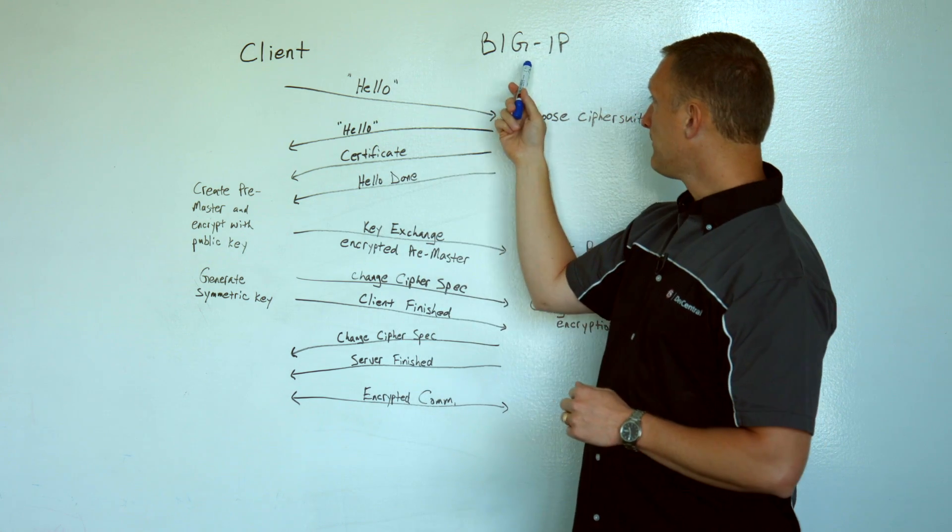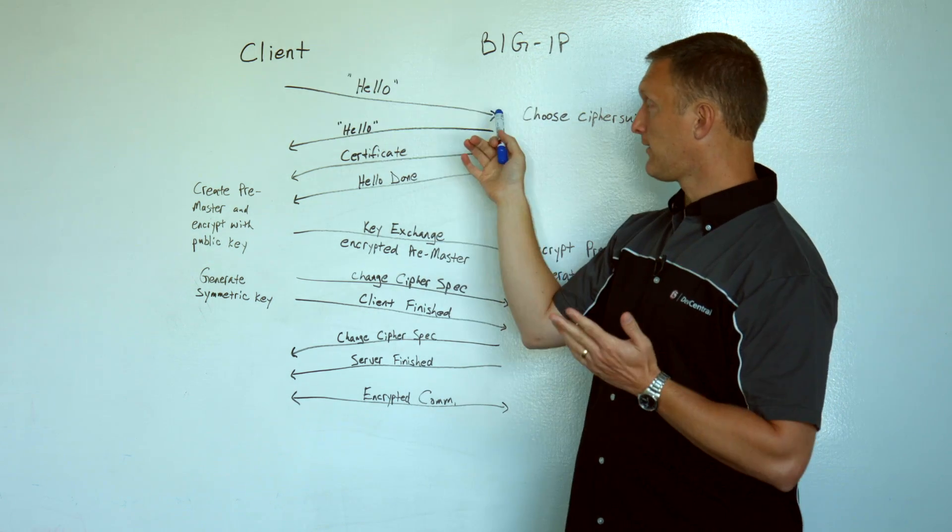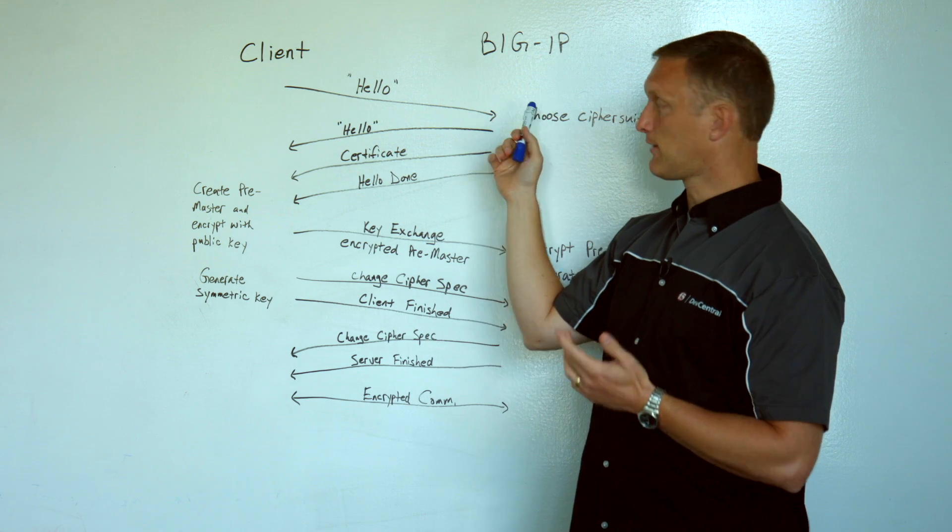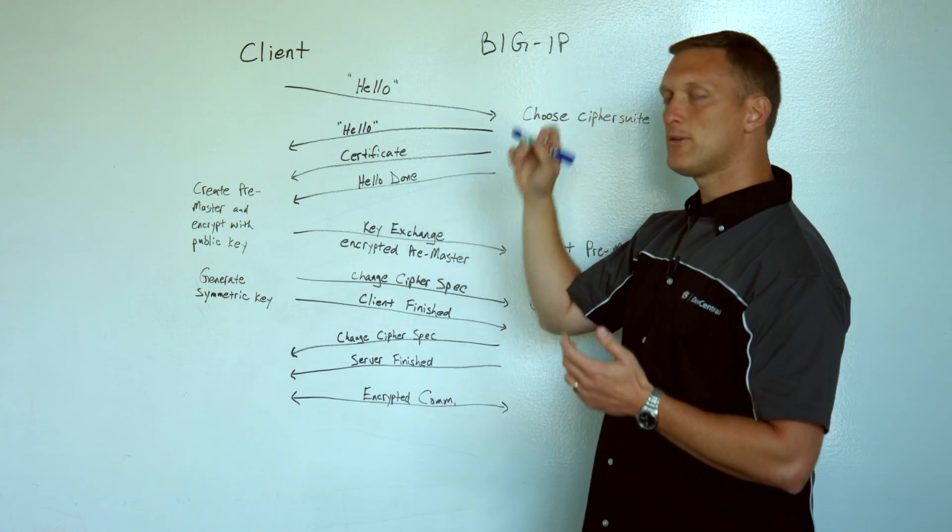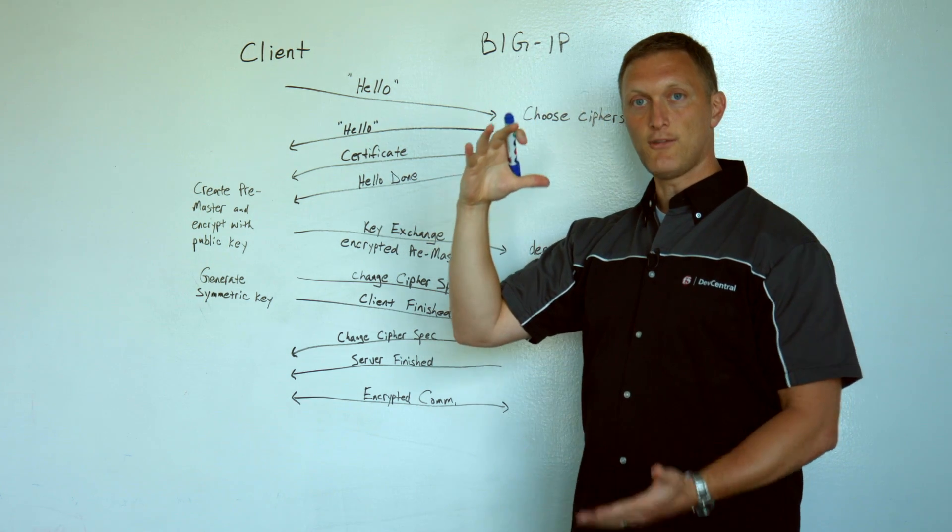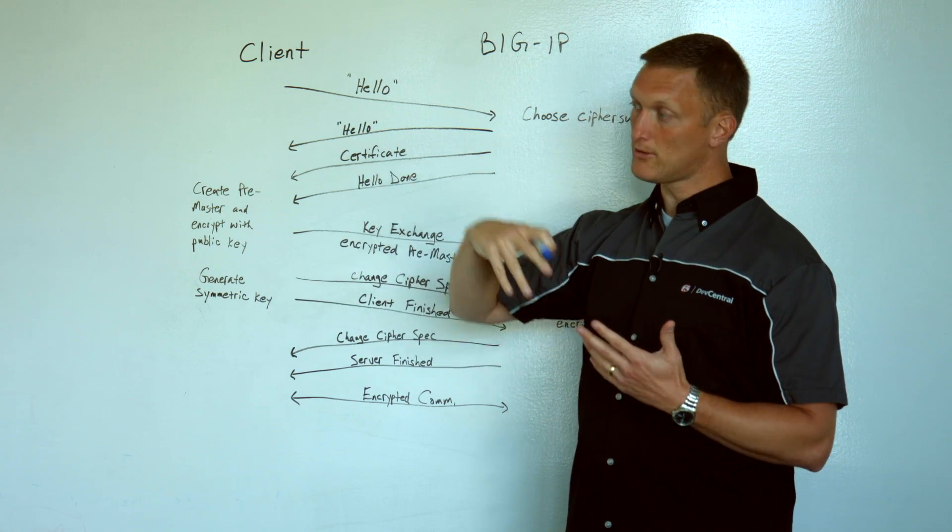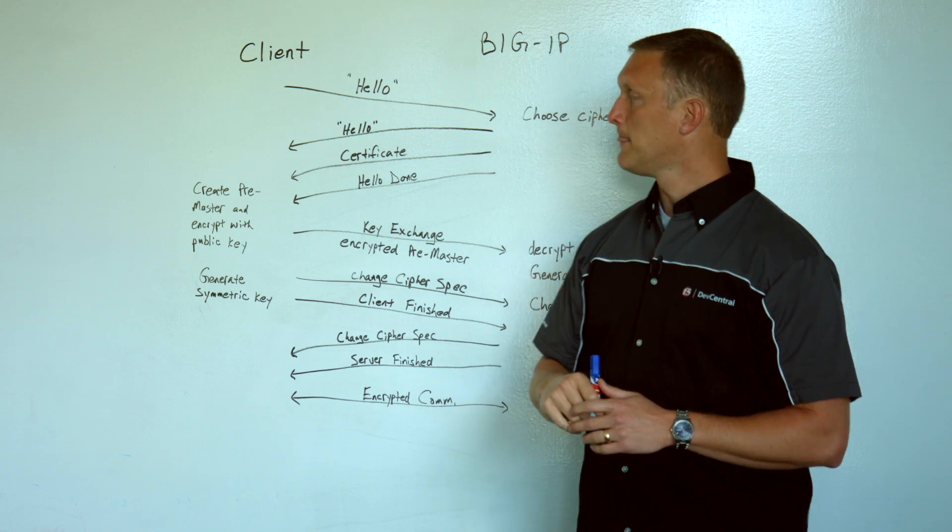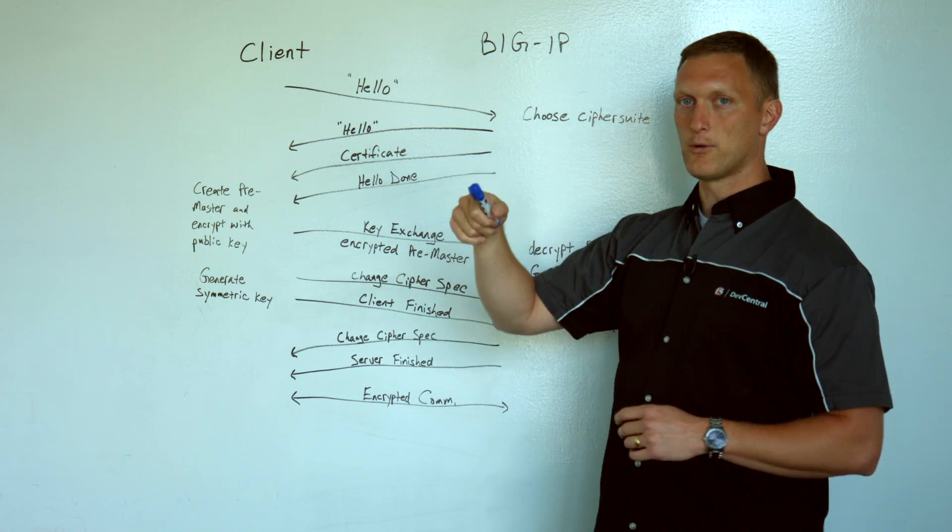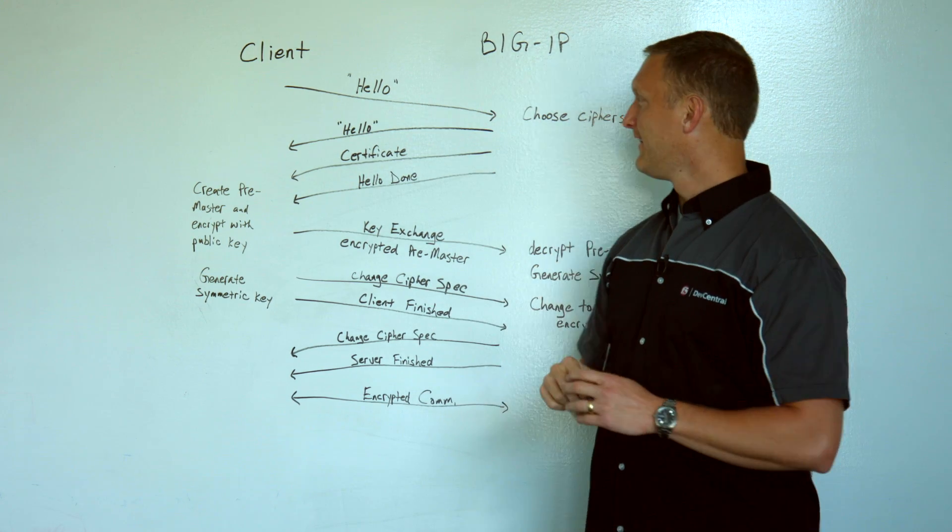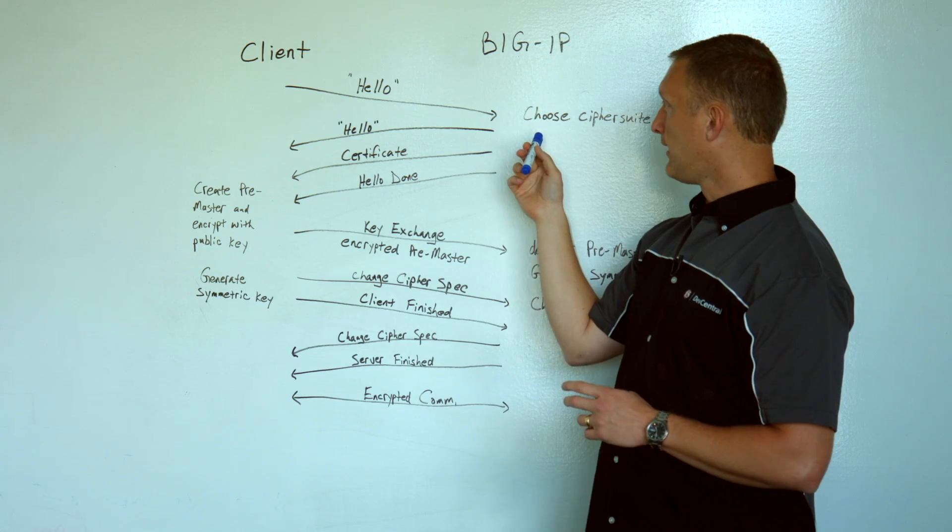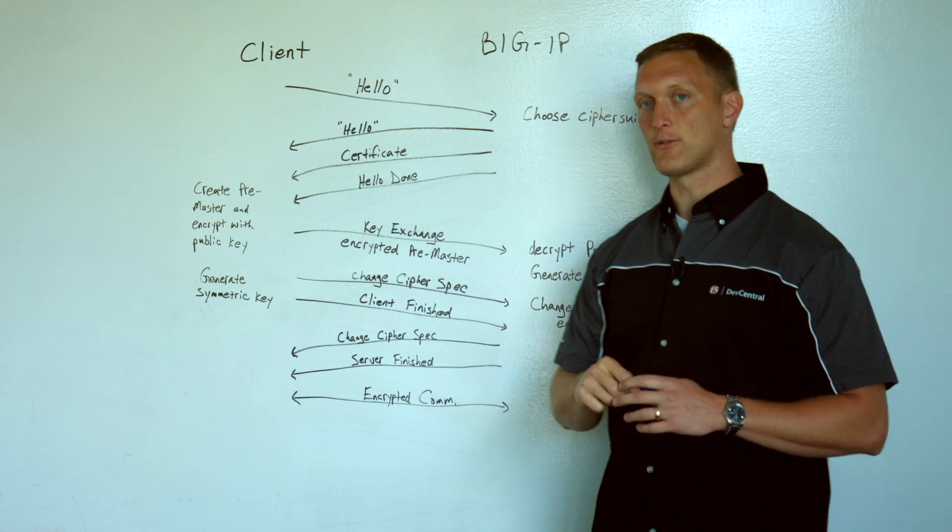So on the BIG-IP, when it does that hello, it's going to offer up these different cipher suites. On the BIG-IP, it's important to configure your cipher list based on what you want to support, based on what you can afford to support from a risk perspective, that kind of thing. And we talked about that in another Whiteboard Wednesday. So you can get out there and watch that one.